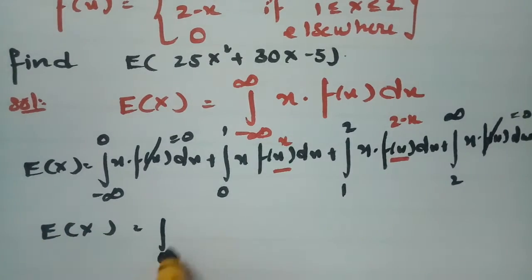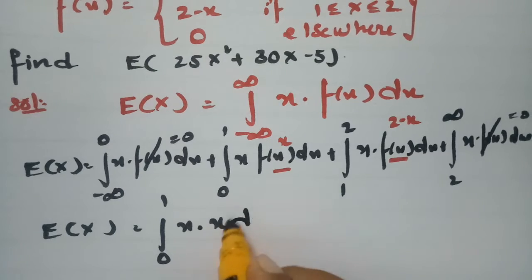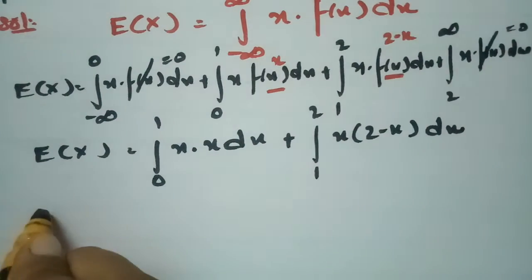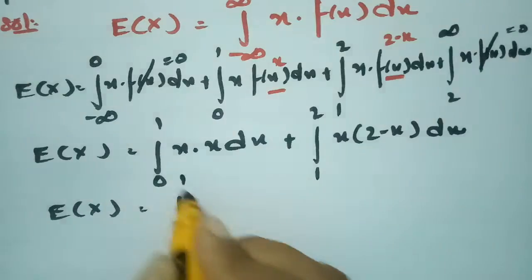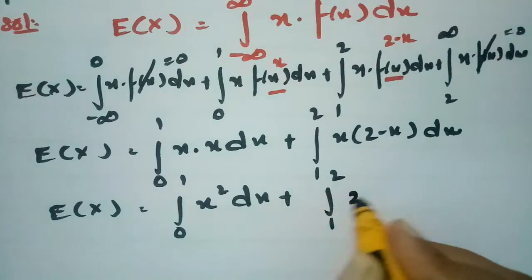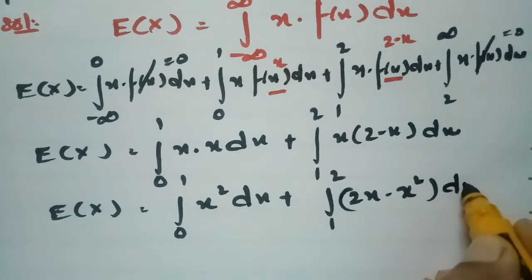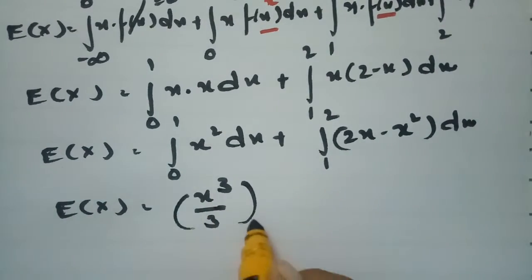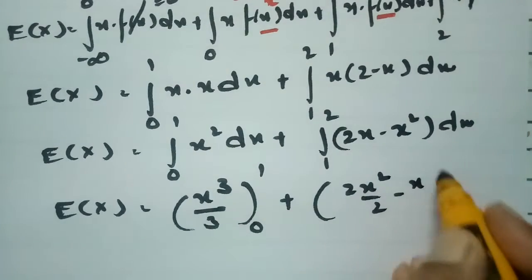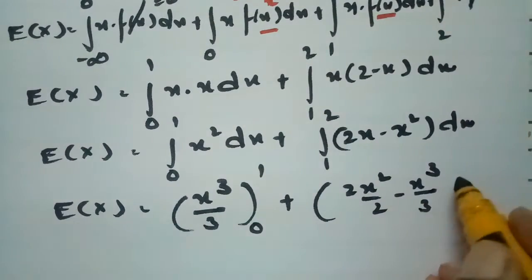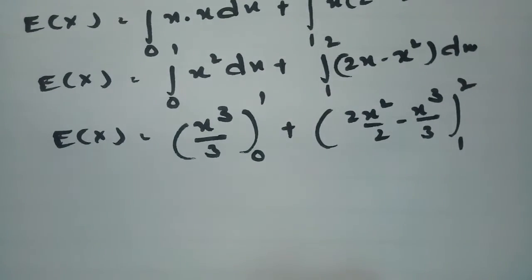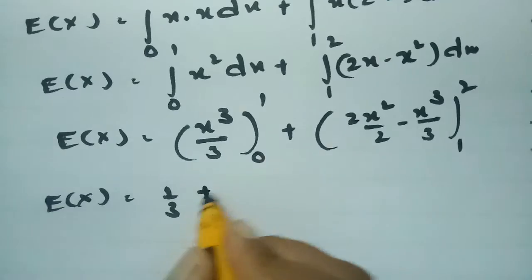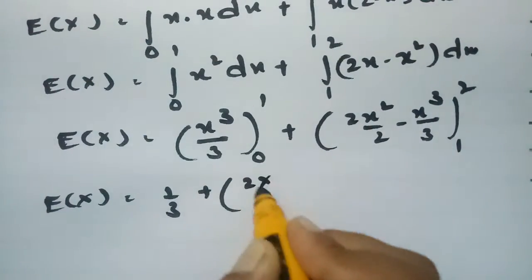So E(x) equals the integral from 0 to 1 of x times x dx, plus the integral from 1 to 2 of x times (2 minus x) dx. This simplifies to the integral from 0 to 1 of x squared dx, plus the integral from 1 to 2 of (2x minus x squared) dx. Integrating gives x cubed over 3 from 0 to 1, plus 2x squared over 2 minus x cubed over 3 from 1 to 2.